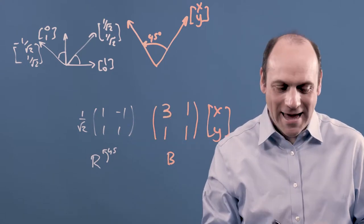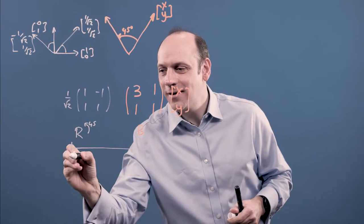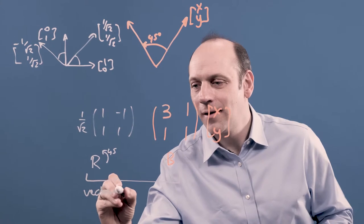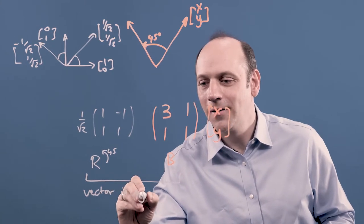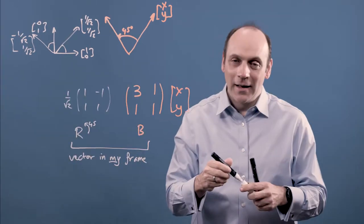So what I get here when I do RB, I've got the vector in my coordinate frame. Now,